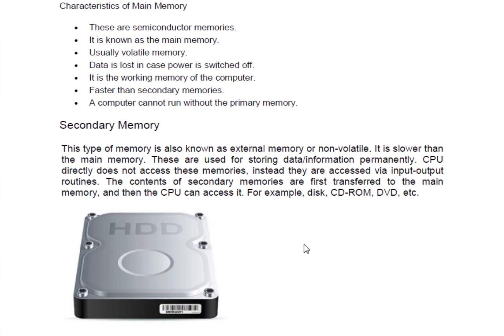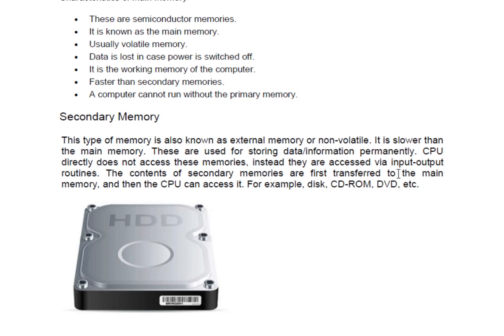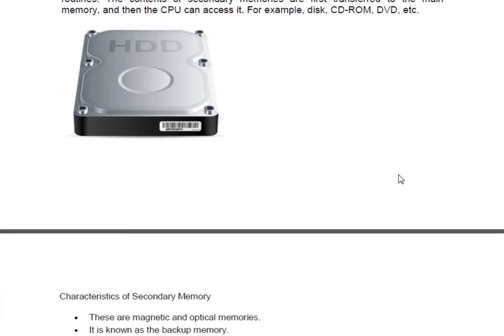Now, secondary memory — also known as external memory, auxiliary memory, or non-volatile memory. Non-volatile means that when electricity is cut off, data still remains in this memory. It is slower than main memory and is used for storing data and information permanently and for long periods. The CPU does not directly access secondary memory — one key difference between secondary and primary memory is that the CPU interacts directly with primary memory, but cannot interact directly with secondary memory. These memories are accessed by input/output devices, and then their content is transferred to main memory for the CPU to access. Examples include hard disks.